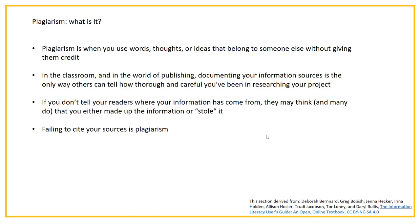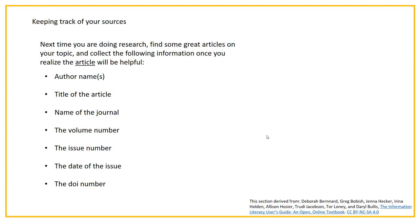We've been talking a lot about citing and how to do it, and certainly citing your sources is the best, or the key, way to avoid plagiarizing. There are a lot of ways to accidentally plagiarize, and one of them is to not be careful in how you're organizing your information and keeping track of your sources and all the information you need from those sources to be able to cite them.